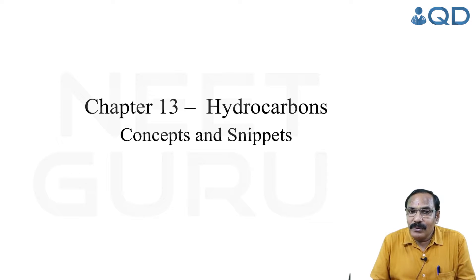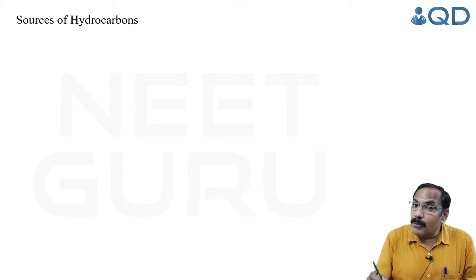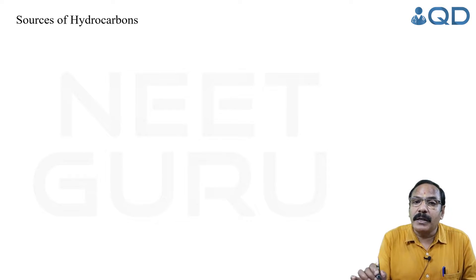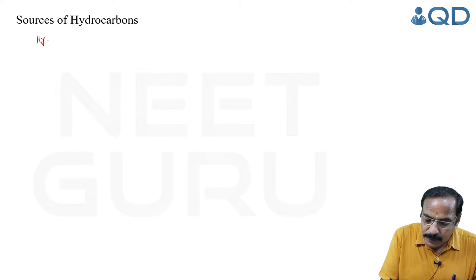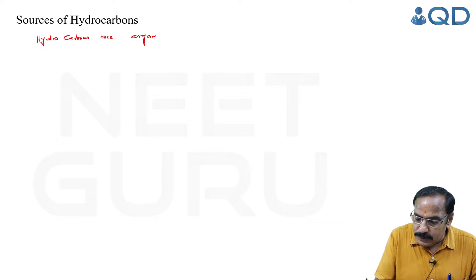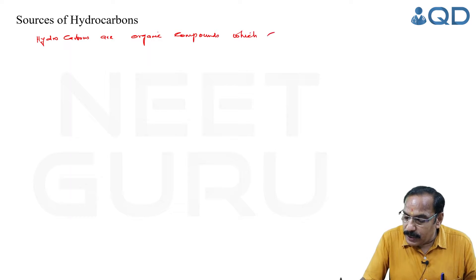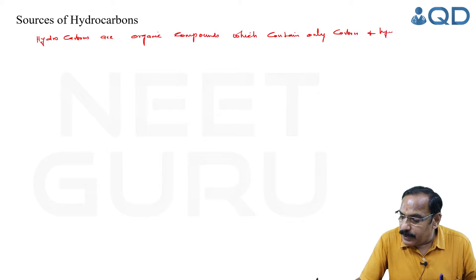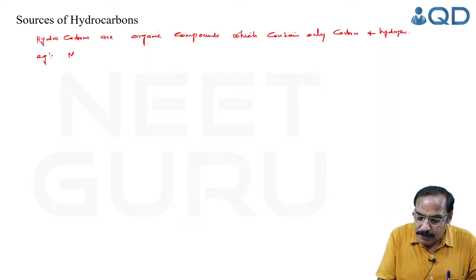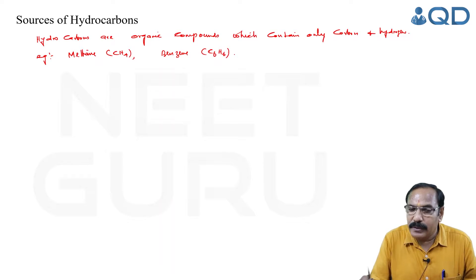We have four important sources of hydrocarbons. Hydrocarbons are organic compounds containing only carbon and hydrogen. To quote a simple example, methane is a constituent of natural gas. Another example is benzene, an important aromatic solvent.